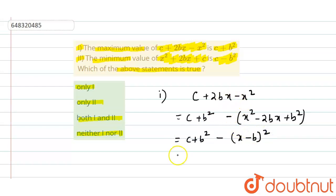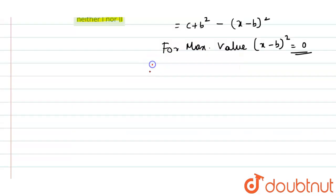We need to find the maximum value. For maximum value, (x - b)² should equal 0. Therefore, the maximum value equals c + b².